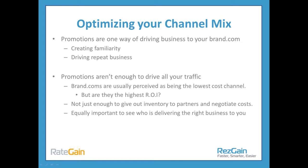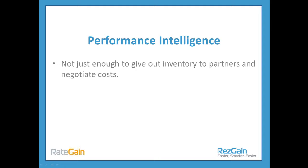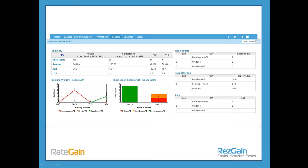It's not just enough to give out inventory to partners and negotiate costs. You need to understand who is delivering the right business to you. Many of the revenue managers I speak to talk about the volume of data they engage with. So, how do you understand it's the right business for you? This is about yielding performance intelligence metrics so you can understand how all that information is coming in — how do you see who is delivering the right business to you?